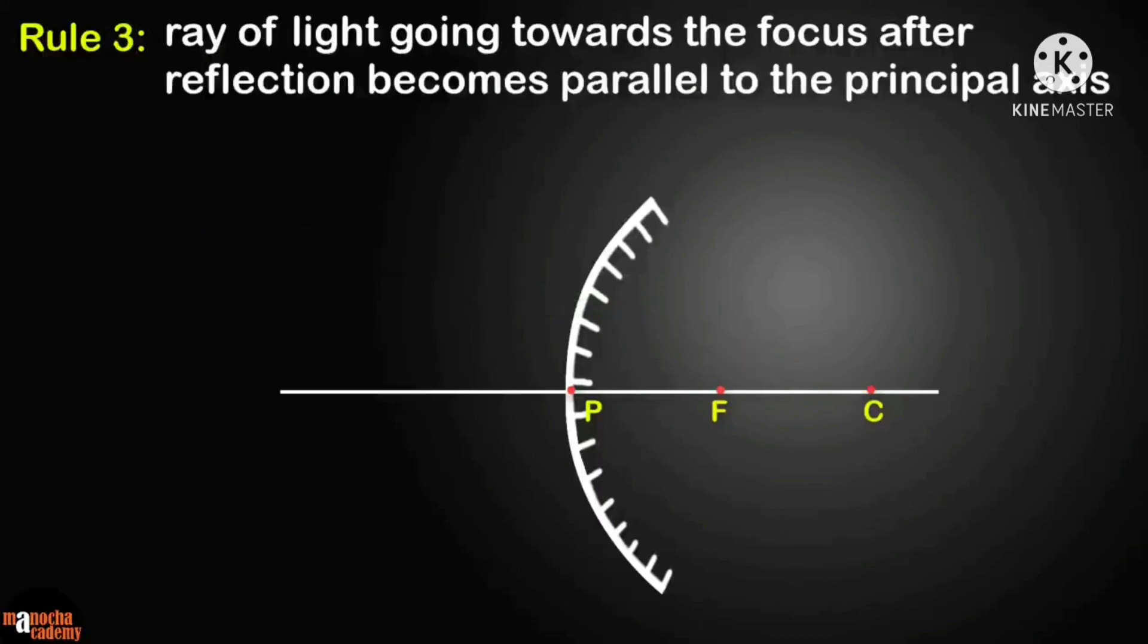Rule 3: a ray of light going towards the focus, after reflection, becomes parallel to the principal axis. Can you see that rule 3 is exactly opposite of rule 1? It's due to the reversibility of light.